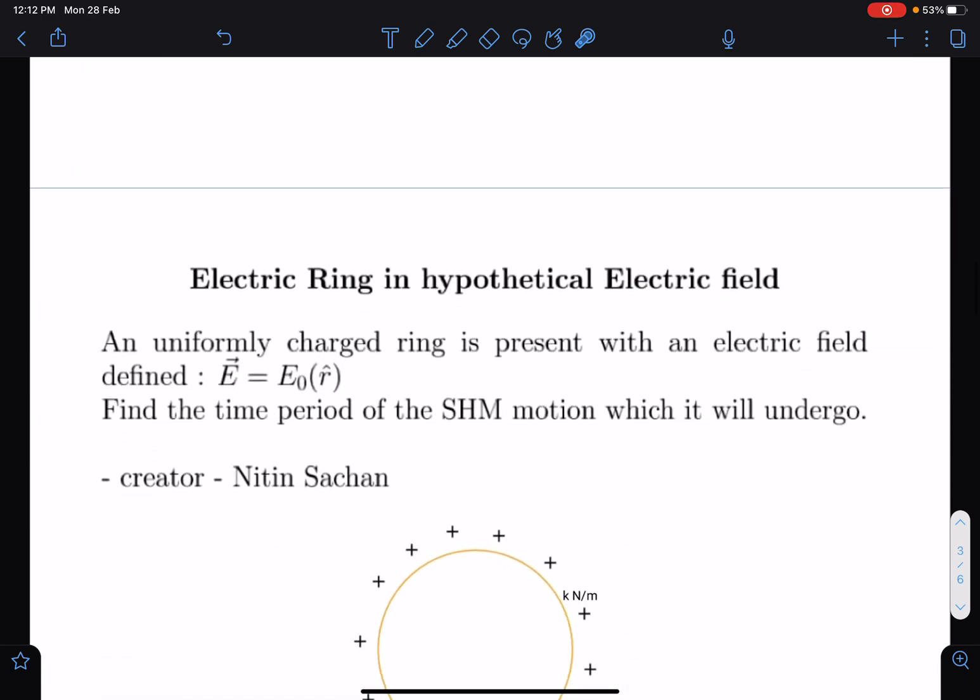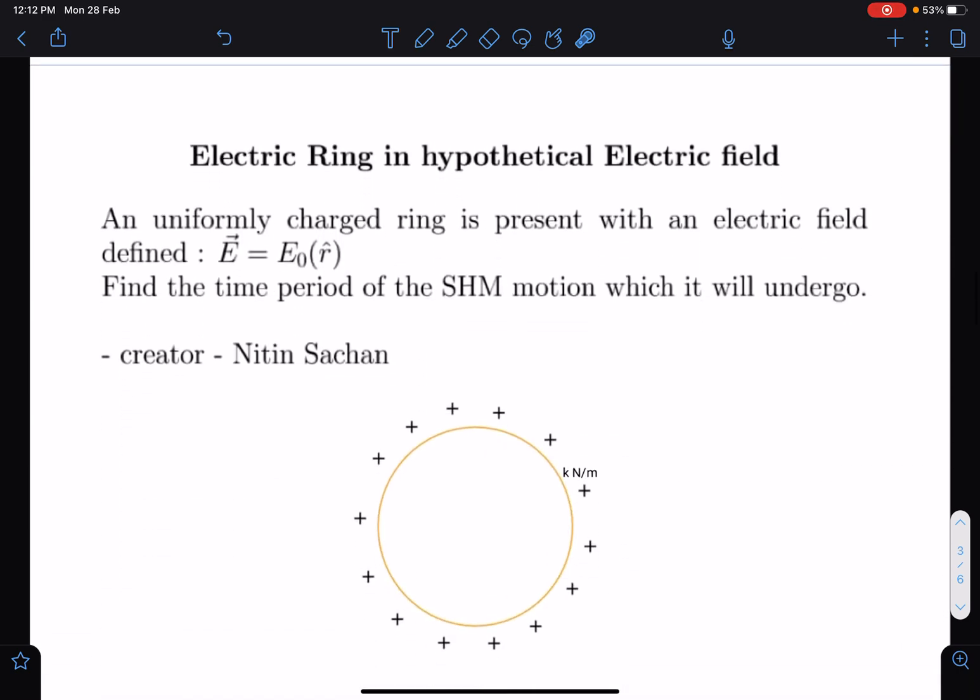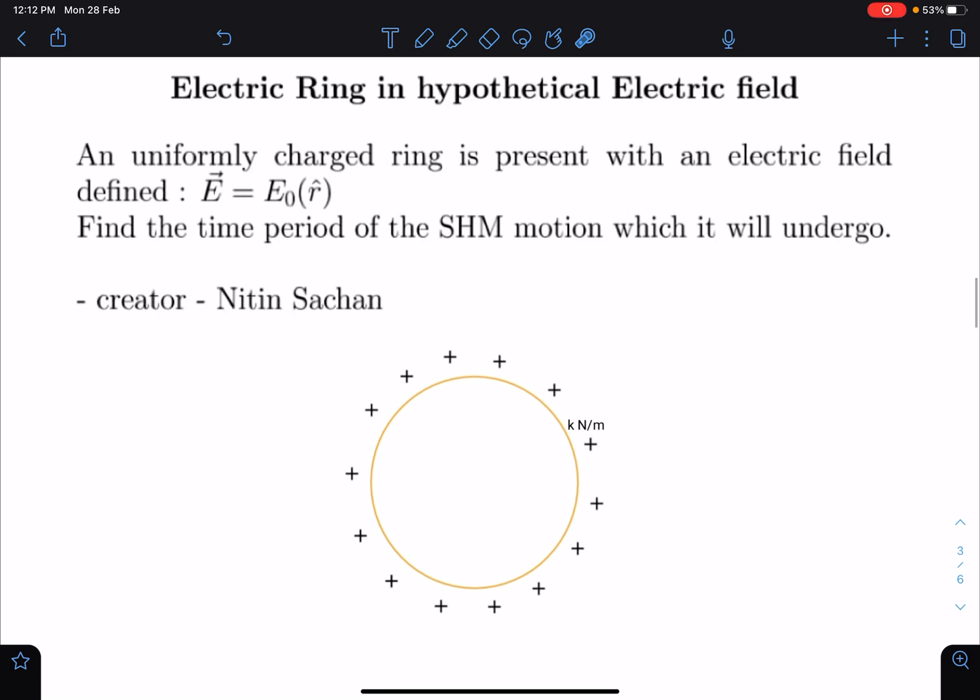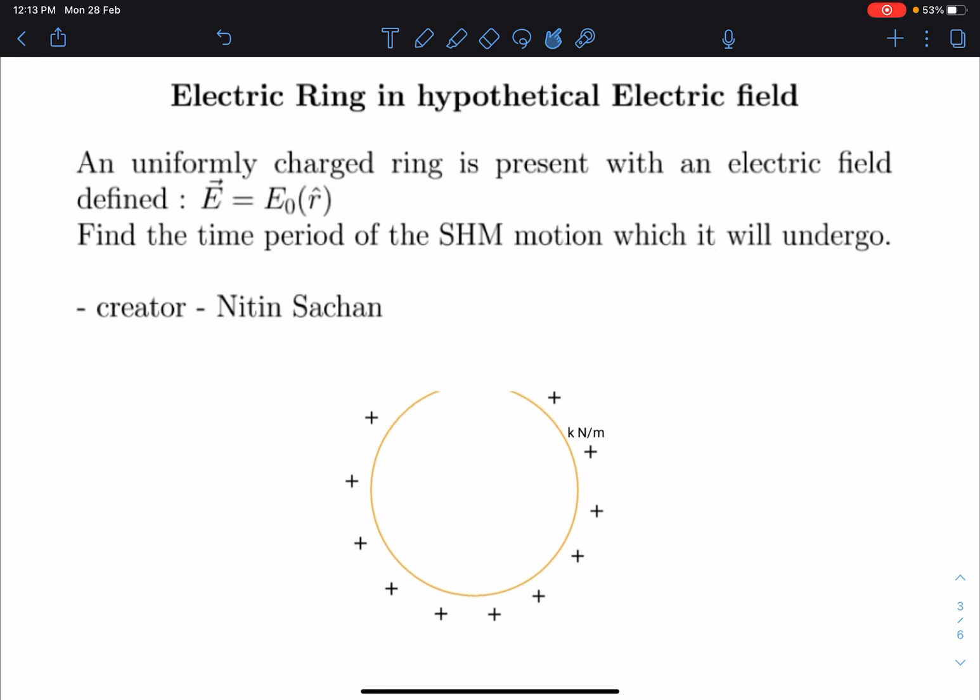So here is this problem. This problem came into existence in a live class two days back. Here's the problem statement: there is an elastic string with the stiffness of K, given as K Newton per meter, and a uniformly charged ring is present with an electric field.